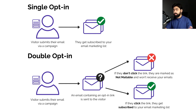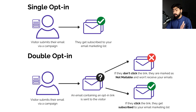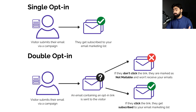With single opt-in, it's very straightforward — somebody fills out a form and you start sending them email newsletters or email campaigns right away. The problem with that is sometimes people will put in a fake email address or a bad email address, and that will affect your email deliverability and ultimately get you in trouble.